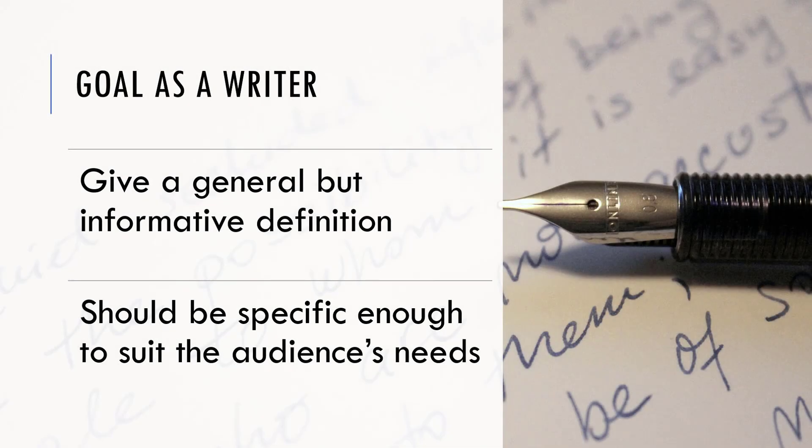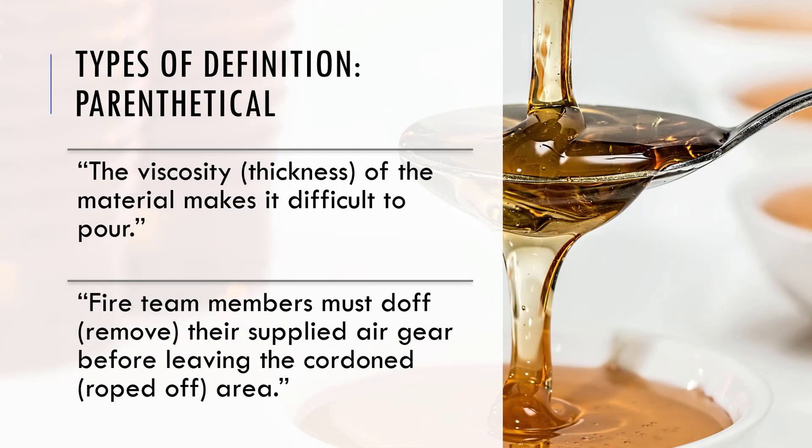Your goal as a writer is to give a general but informative definition — you don't want to overdo it. Just give what's required, but the definition should be specific enough to suit the needs of your audience. The easiest type, and the one preferred in papers, is parenthetical. You simply put the definition in parentheses behind the term. For example, 'the viscosity (thickness) of the material makes it difficult to pour.' It takes up very little space to clarify the term.